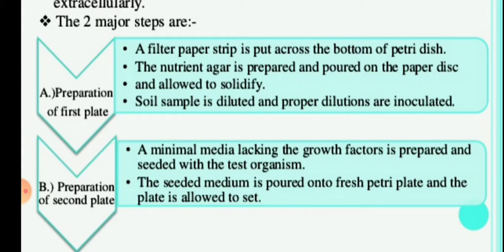For the second plate, minimal medium is poured into the petri dish. Minimal medium is a deficient medium that lacks the growth factors required by microorganisms. This medium is seeded with a test organism — for example, E. coli — which requires a certain growth factor that is missing in the minimal medium. If incubated alone, E. coli will not grow because the required growth factor is absent.